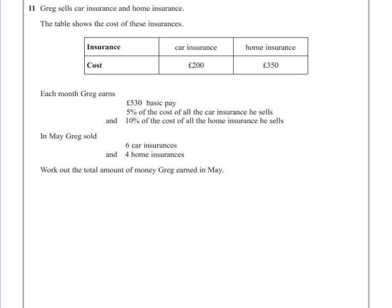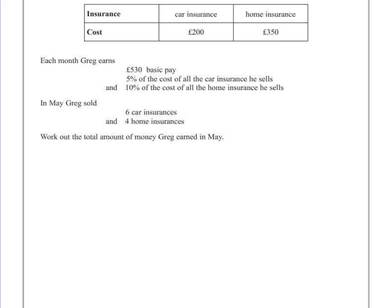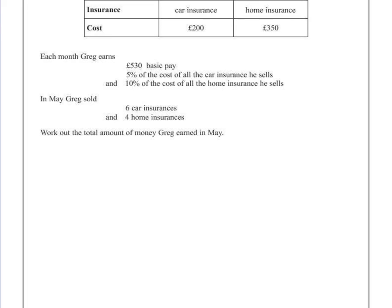You're given two pages to work this out, but if you're very careful and organise your work well, you can probably fit it all in this space at the bottom. So we know he automatically gets £530. So firstly, to work out how much he gets from the car insurance, we need to know what the cost of all the car insurance was. So let's start off with the car insurance.